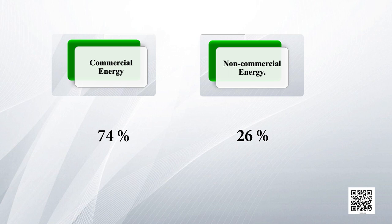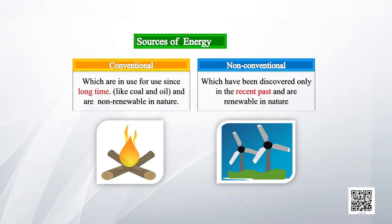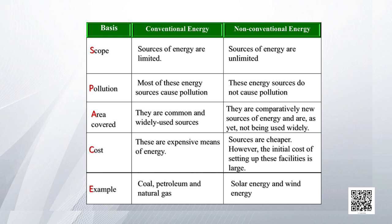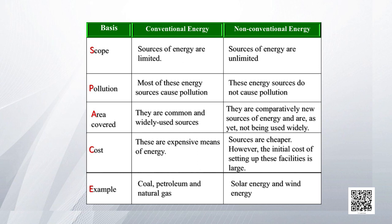Around 74% of energy requirements are met through commercial sources and only 26% through non-commercial sources. Energy can also be classified on the basis of renewability — conventional sources and non-conventional sources. Conventional sources are traditional sources used for a long period of time and are generally non-renewable and polluting. Non-conventional sources are modern sources that have come to use recently and are generally non-polluting and renewable. Examples of conventional sources are coal, petroleum, and electricity. Examples of non-conventional sources are solar energy, wind energy, and tidal energy.